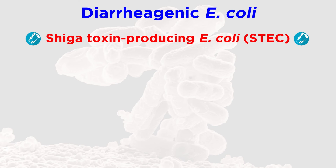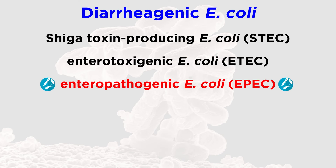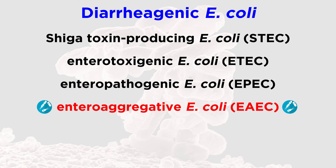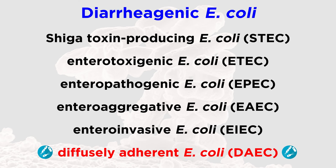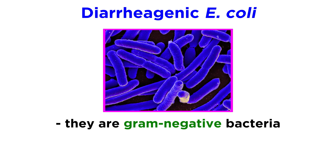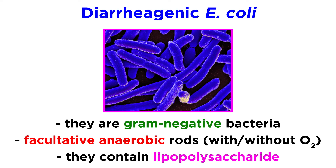These are Shiga toxin-producing E. coli (STEC), enterotoxigenic E. coli (ETEC), enteropathogenic E. coli (EPEC), enteroaggregative E. coli (EAEC), enteroinvasive E. coli (EIEC), and diffusely adherent E. coli (DAEC). These bacteria are gram-negative, facultative anaerobic rods, which means they can survive both with or without oxygen present, and they contain lipopolysaccharide.